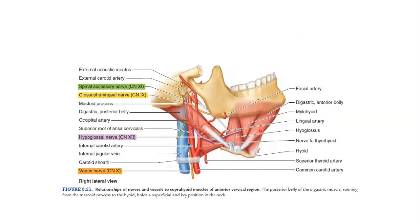The last slide shows the suprahyoid muscles — as covered in my lecture on suprahyoid muscles in relation to the anterior cervical region and the anterior triangle of the neck. There are four suprahyoid muscles including the mylohyoid and digastric. Also shown here is the internal jugular vein and the common carotid artery dividing into the external and internal carotid arteries. Associated with the internal jugular vein are four cranial nerves: the 9th, 10th, 11th, and 12th cranial nerves. You can identify the posterior belly of the digastric and these serial relations. The 12th cranial nerve is the hypoglossal nerve, which supplies the extrinsic and intrinsic muscles of the tongue.